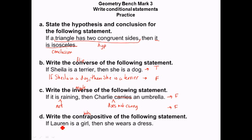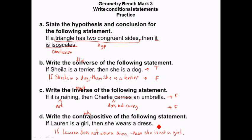For the contrapositive, we flip it and make it negative: if Lauren does not wear a dress, then she is not a girl. We flipped it and negated it. Both of these are decidedly false, because there are plenty of girls who don't wear dresses, and just because you're not wearing a dress does not mean you're not a girl.